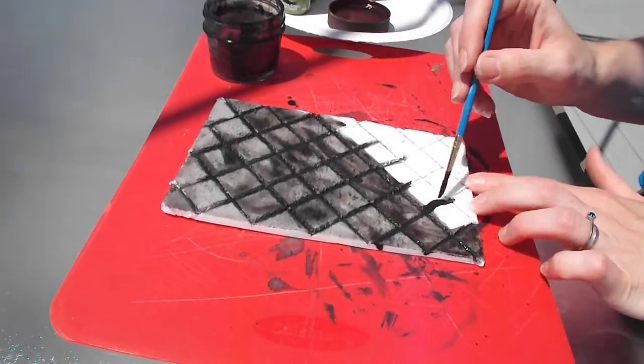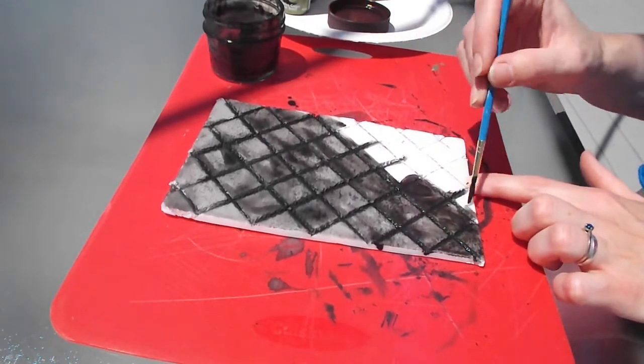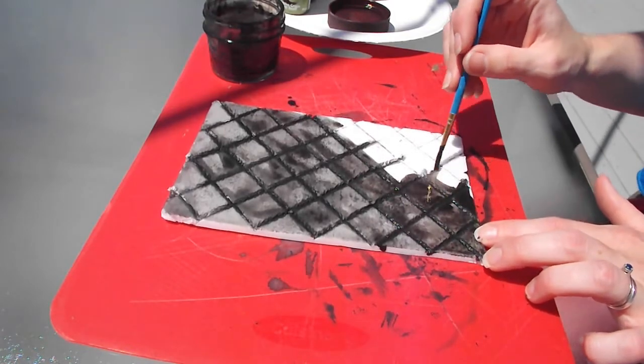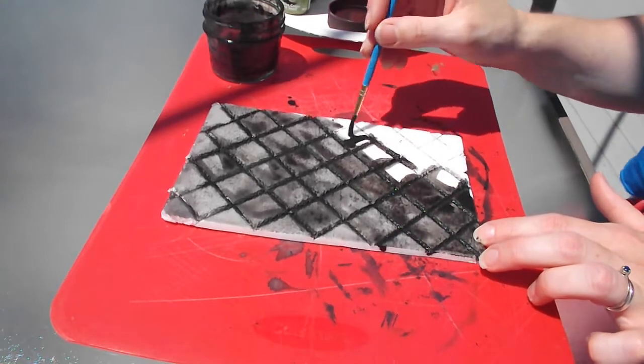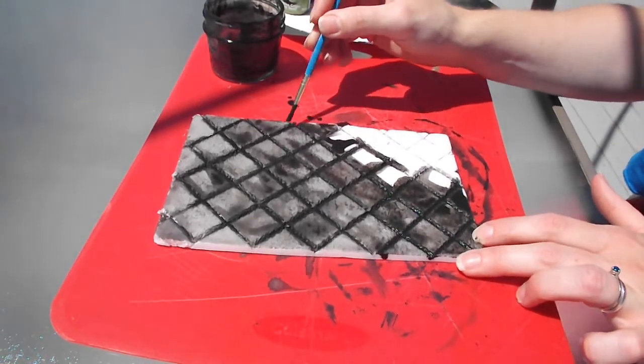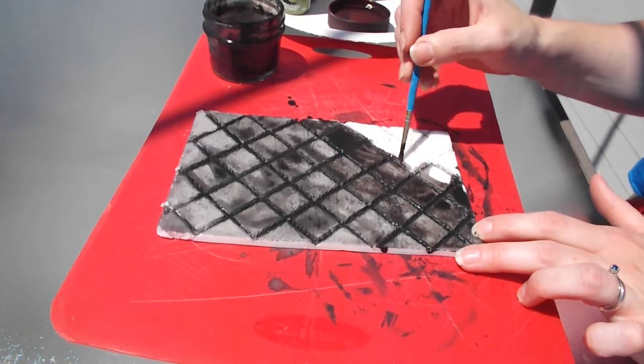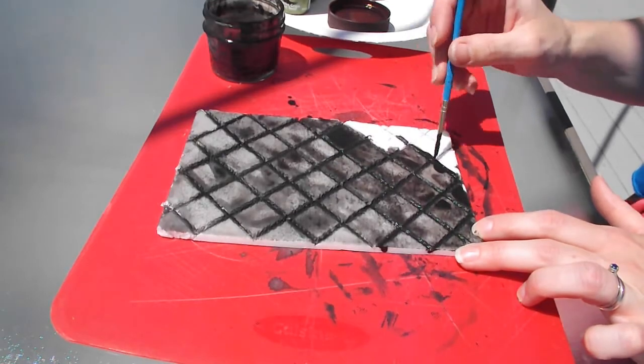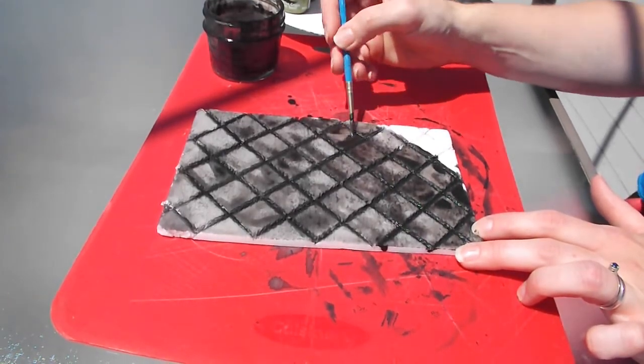So in this case, I'd recommend if you have some time do the black wash maybe like a day ahead of time. And then you can work on putting in your paint colors the next day. If it's a matter of you have some time and you want to get this done a little bit faster, use a hair dryer. But don't put it too close to the foam board or it might cause it to warp due to the heat.